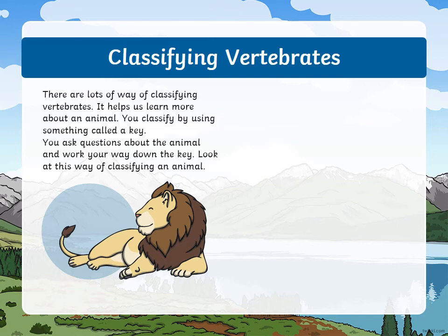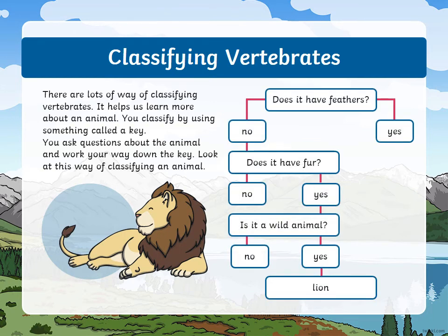There are lots of ways of classifying vertebrates. It helps us learn more about the animal. You classify by using something called a key. You ask questions about the animal and work your way down the key. For example: does it have feathers? Yes or no. Does it have fur? Yes or no. Is it a wild animal? Yes or no. And so when we work down the key, we might identify the animal as a lion.